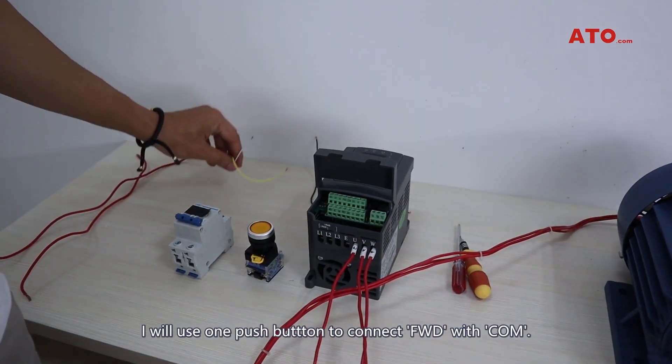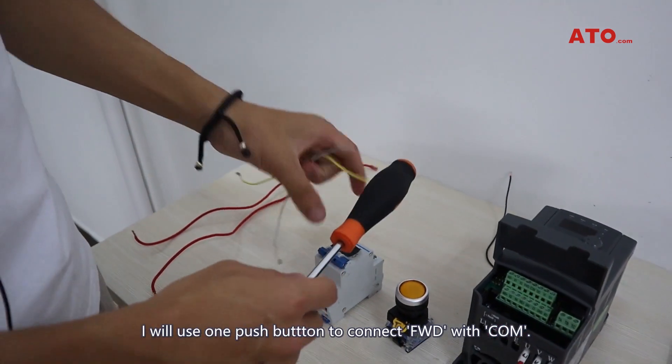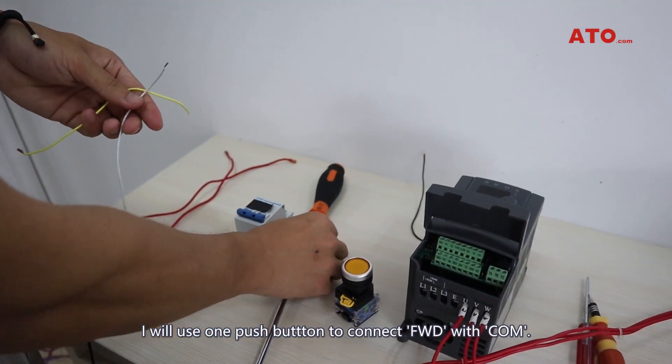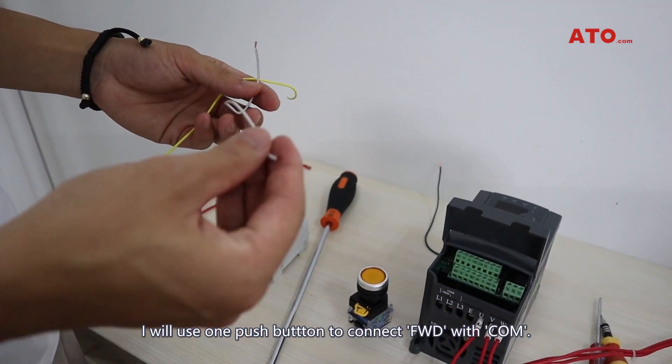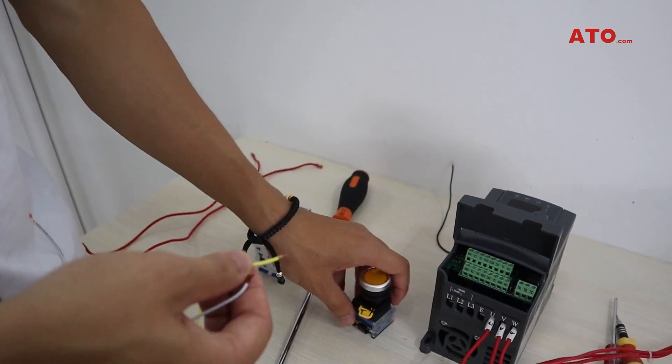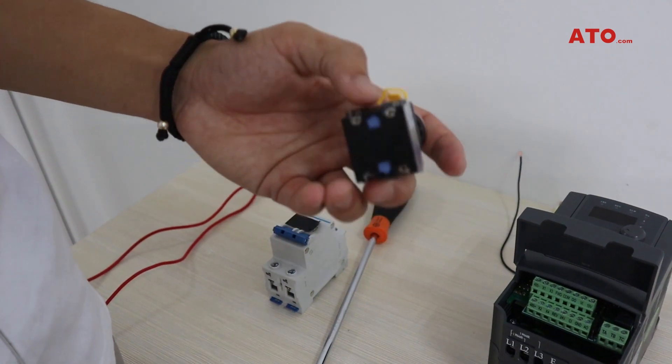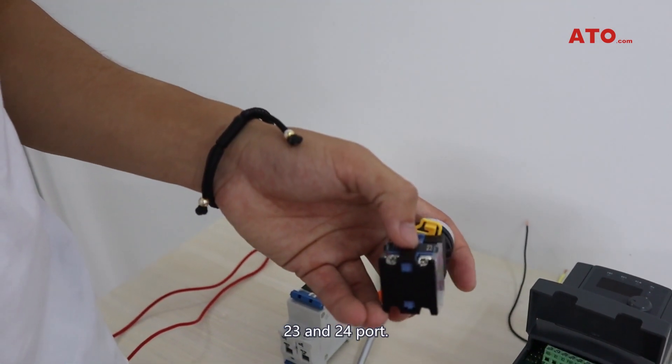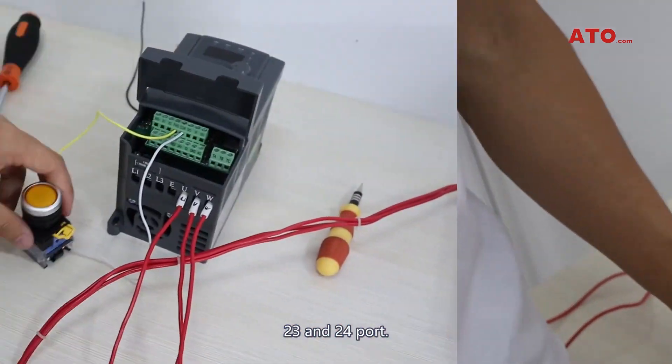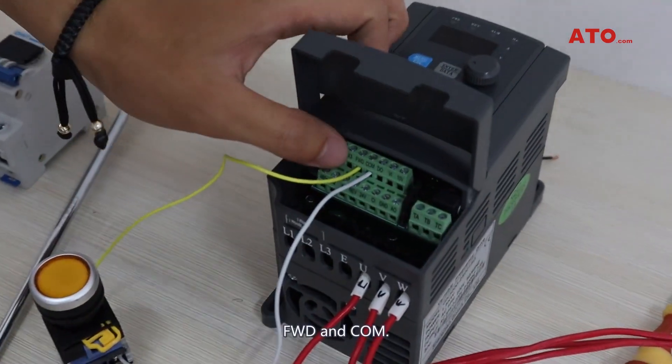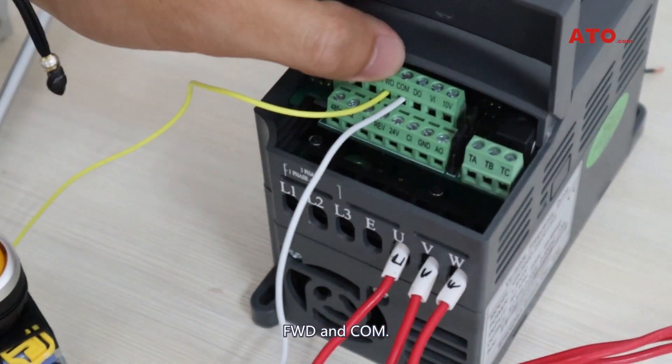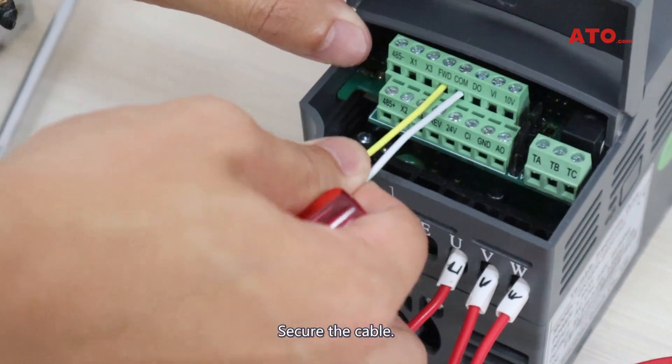Now I will use one push button to connect it forward with common. Here should be used normally closed. Here is 23 ports and 24 ports. Forward and common. Secure the cable.